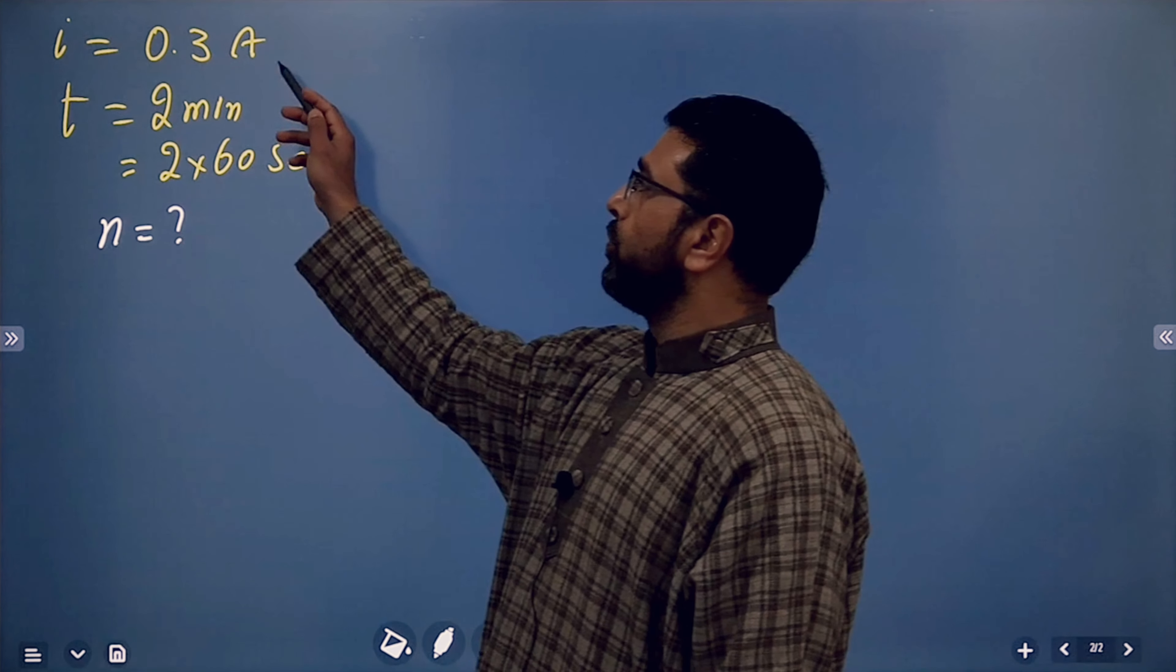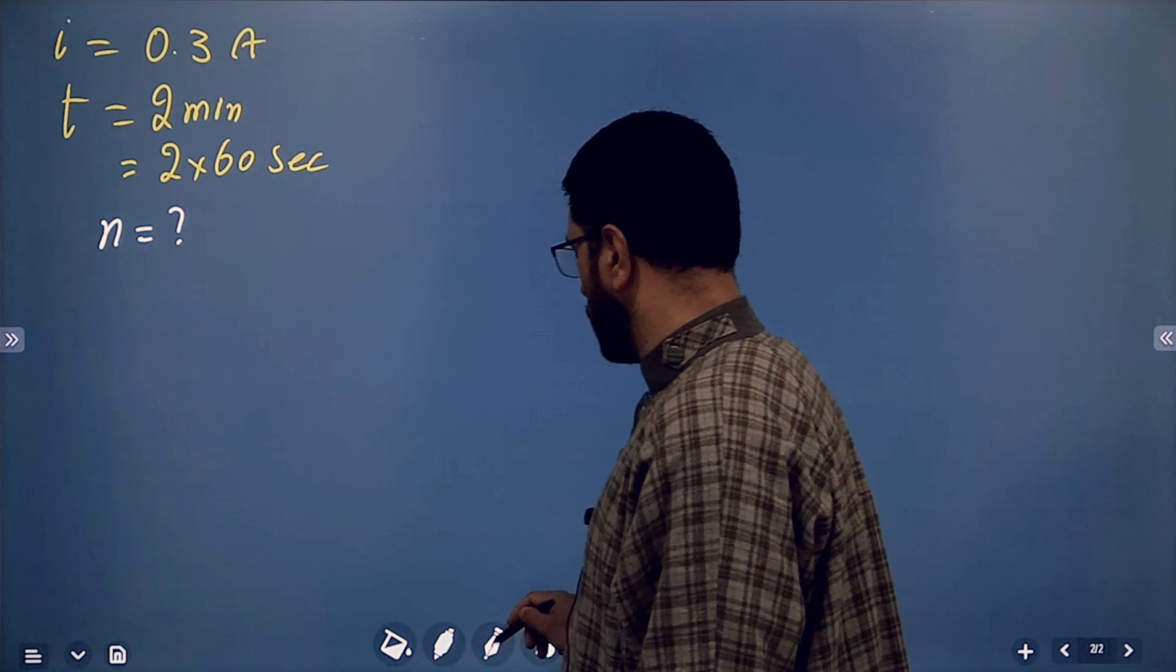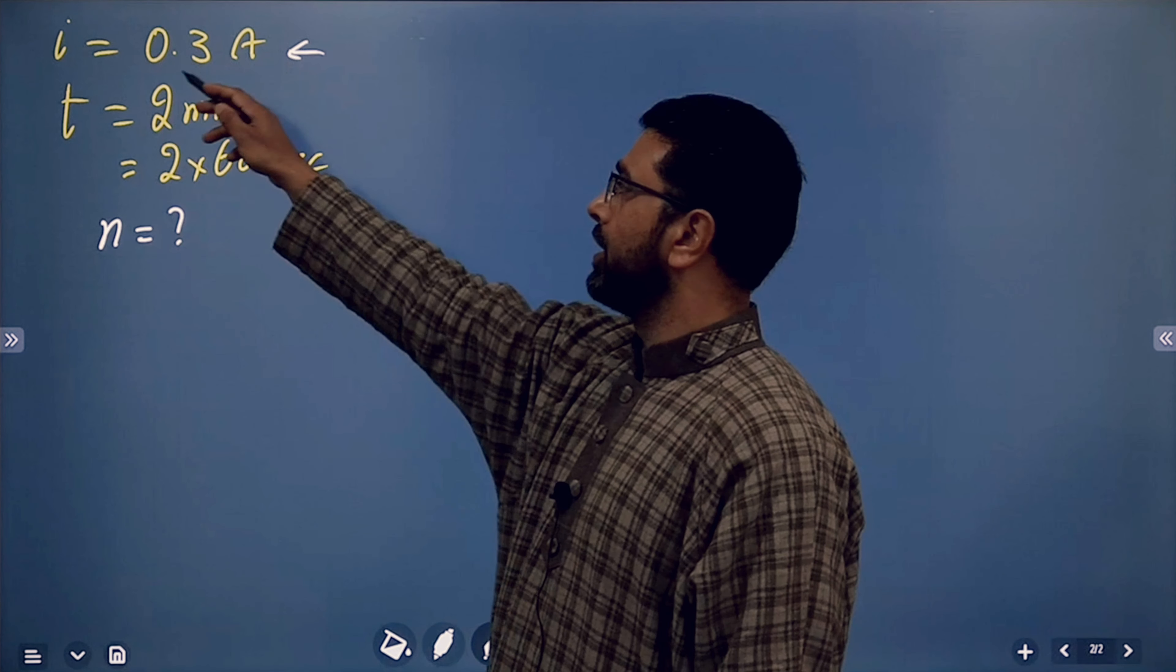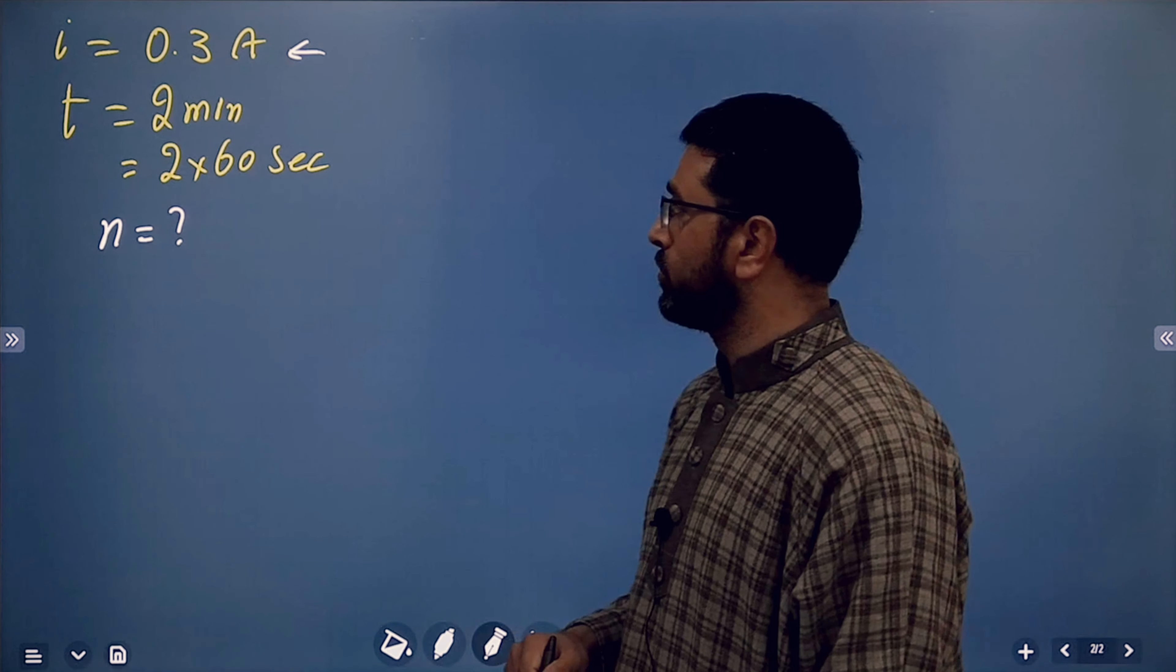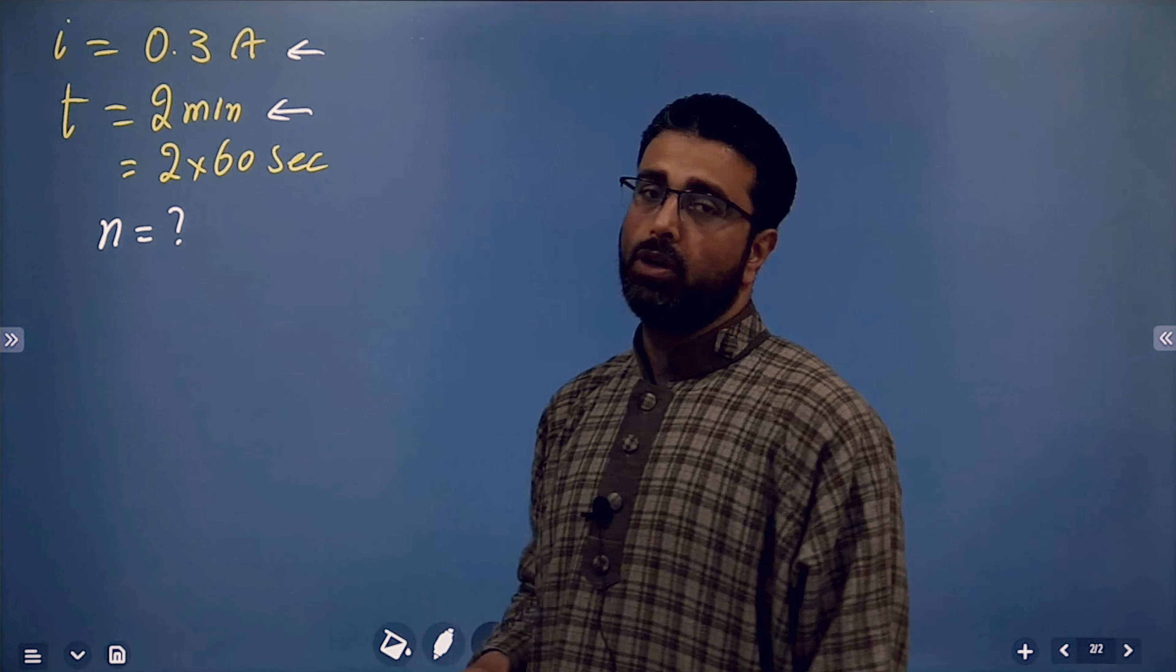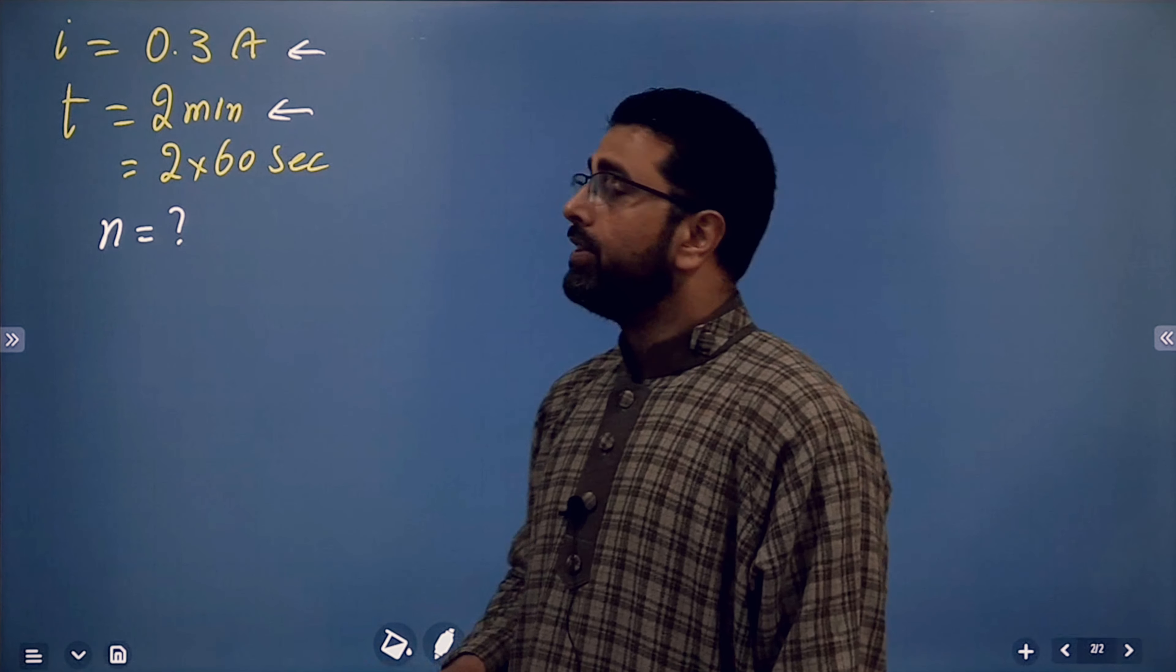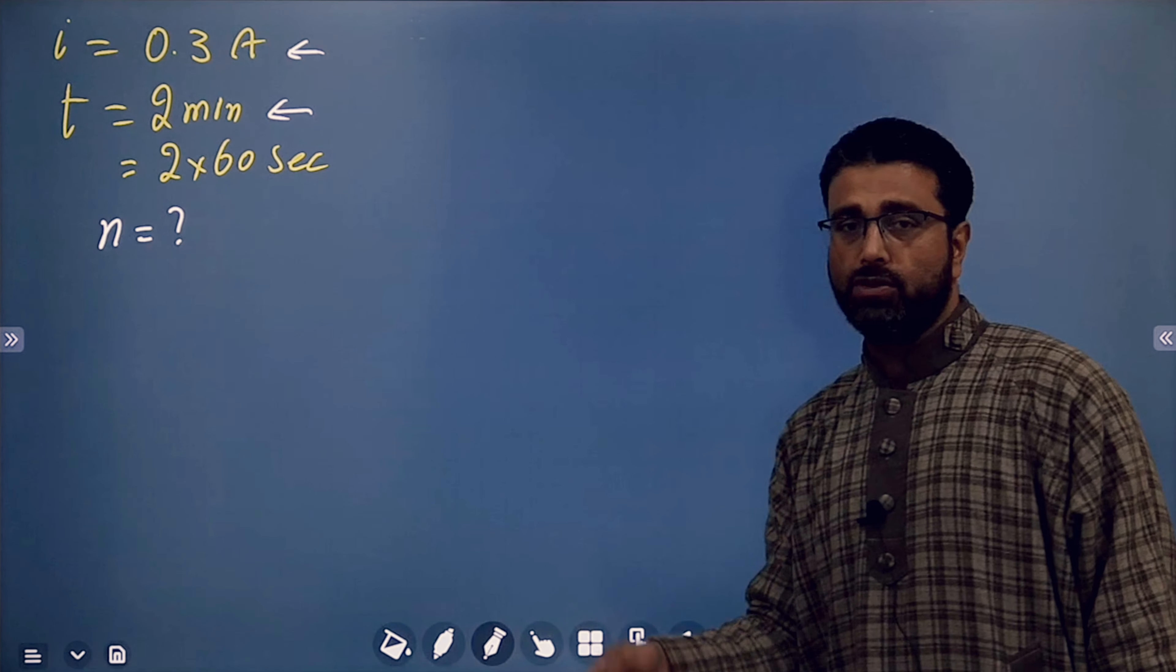If a current of 0.3 amperes flows through your chest for 2 minutes, which is 2 into 60 seconds, then we have to see how many electrons pass through your chest.